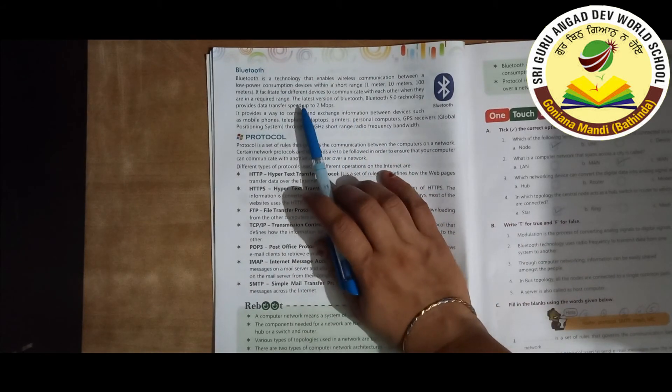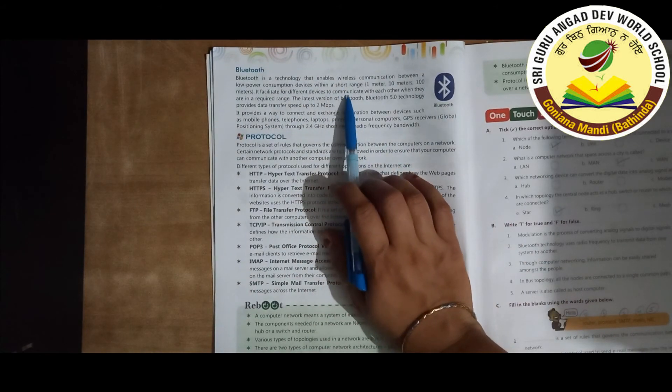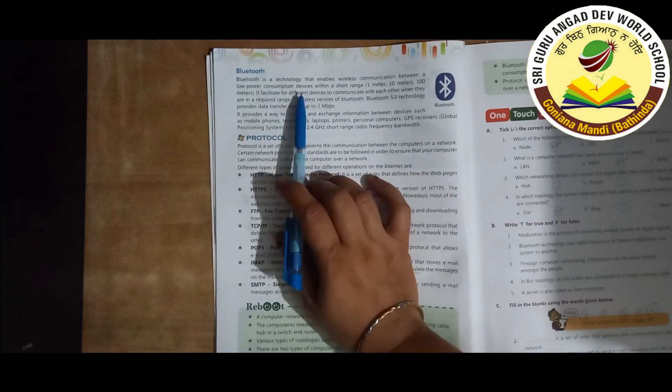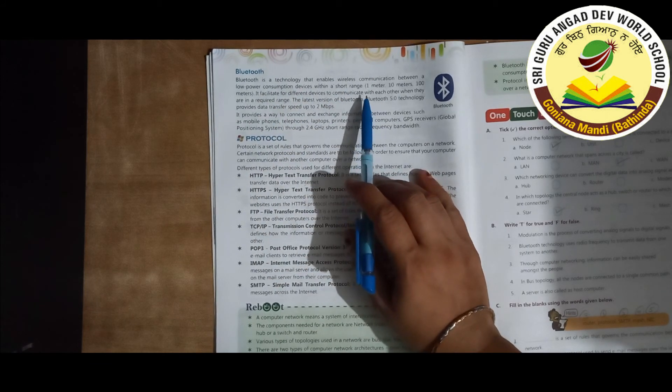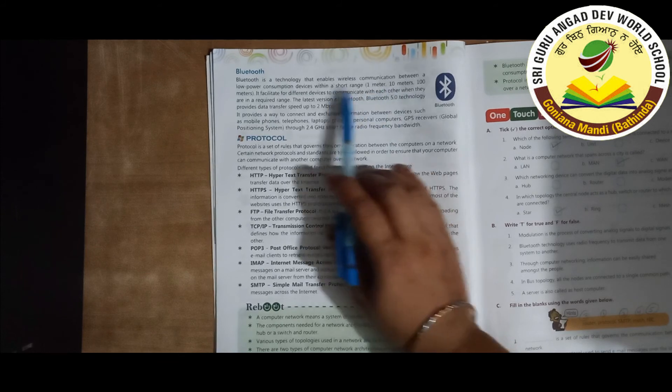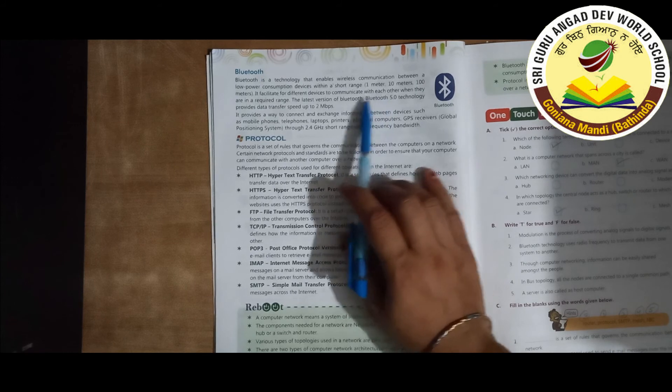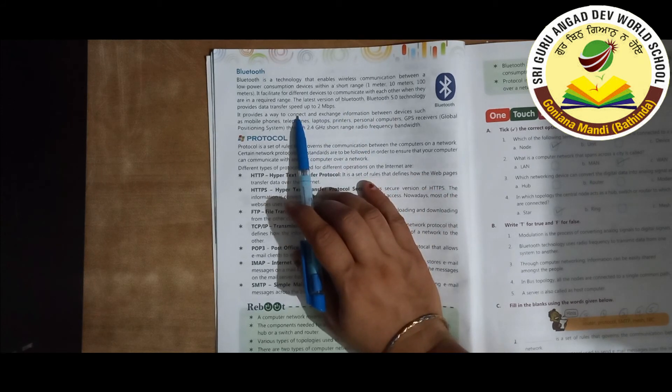Bluetooth is a technology that enables wireless communication between low power consumption devices within a short range: one meter, ten meters, or one hundred meters. It facilitates for different devices to communicate with each other, as we are using mobile Bluetooth. It is very common use.